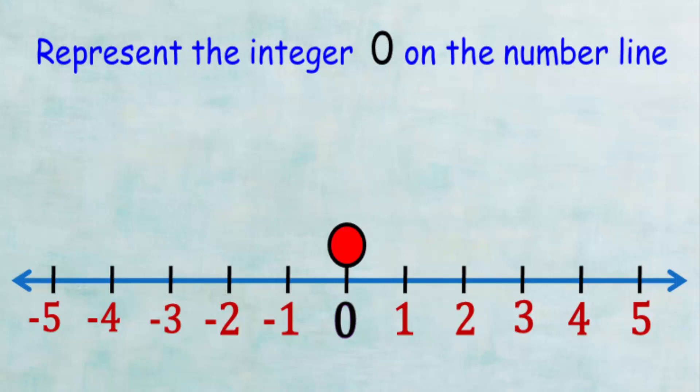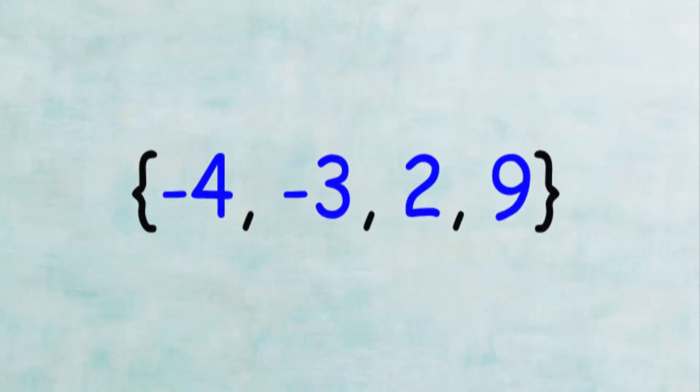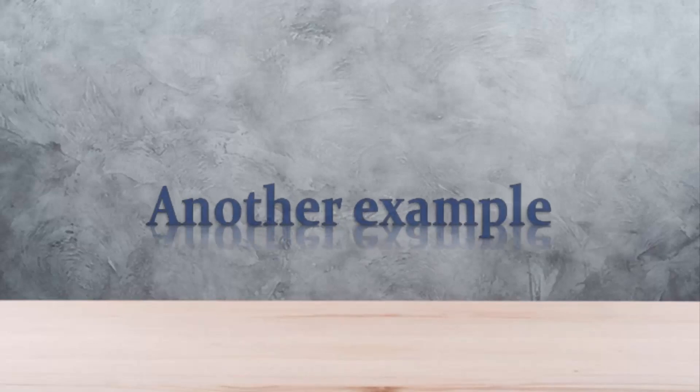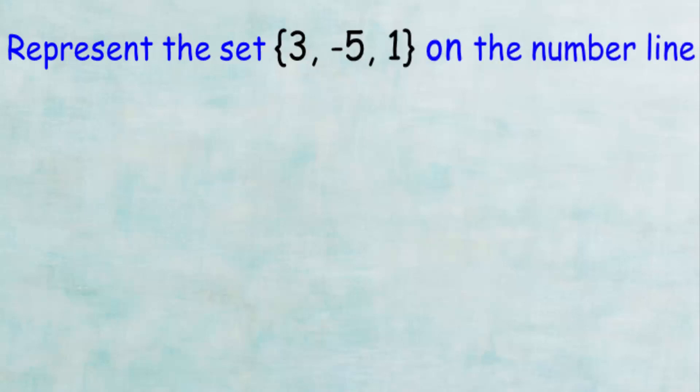Finally, we have learned how to represent an integer on the number line, but what if we have a set of numbers? We will see in this example how to represent a set of numbers. We want to represent the set of numbers 3, -5, and 1. The method is easy. All we do is put a shadow circle around each number we want to represent.